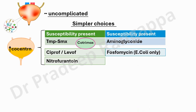Fosfomycin is recommended and is available in oral formulation — urologists love it. However, IDSA suggests fosfomycin should be used only for E. coli, not for Klebsiella, not for Pseudomonas, not for Morganella, not for Enterobacter cloacae or aerogenes. So there is a recommendation from IDSA for fosfomycin only for E. coli in uncomplicated UTI; in complicated UTI, it is not recommended.